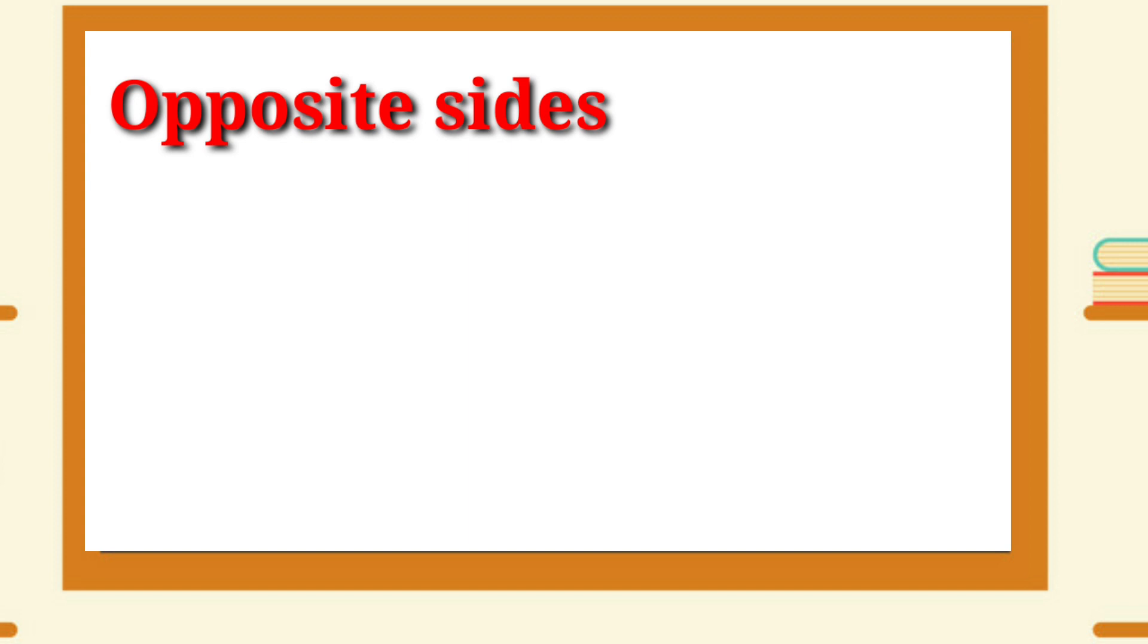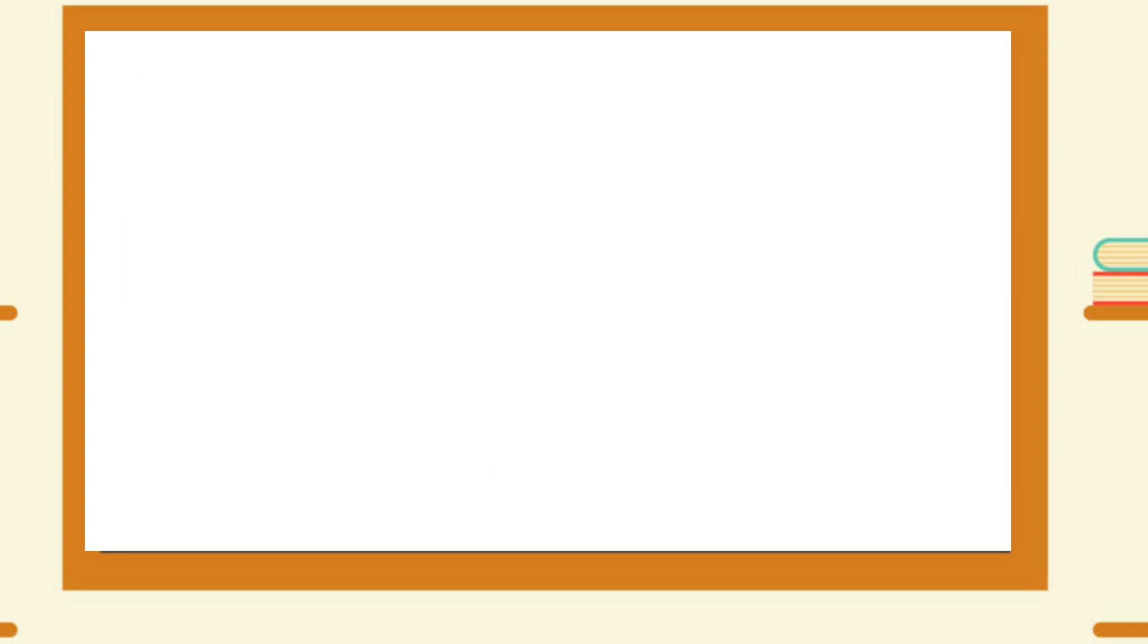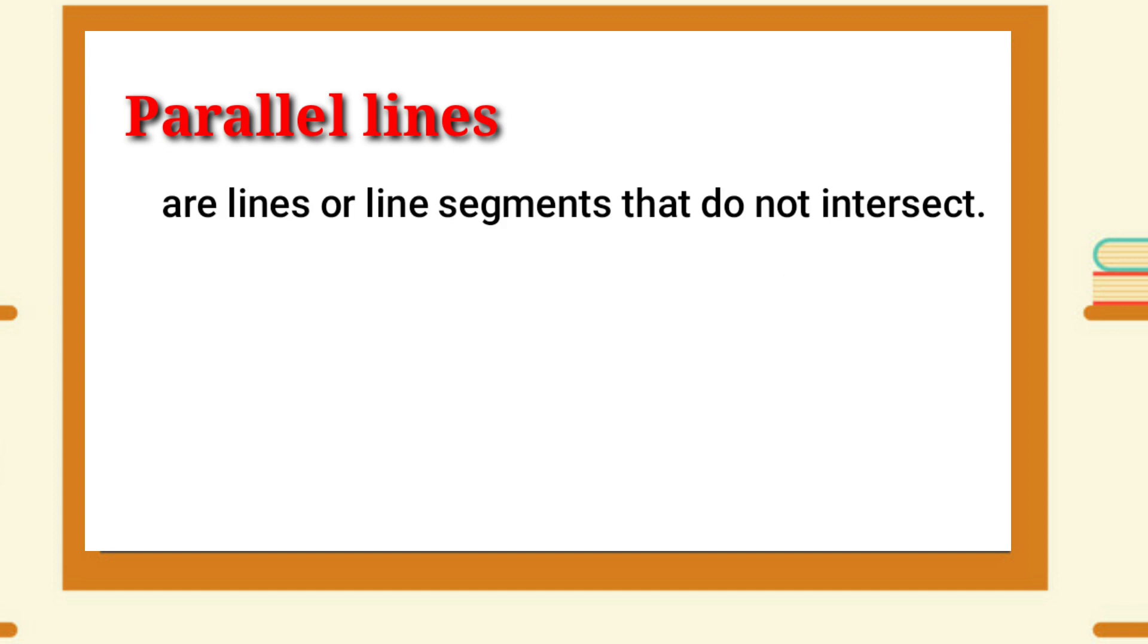Opposite Sides are the sides opposite to each other. Parallel Lines are lines or line segments that do not intersect.